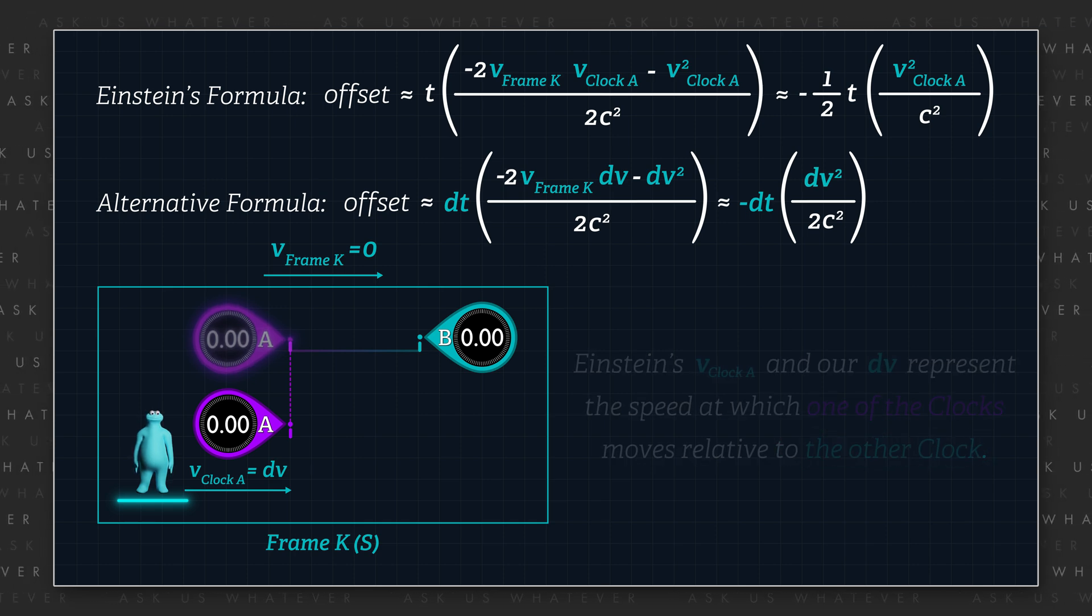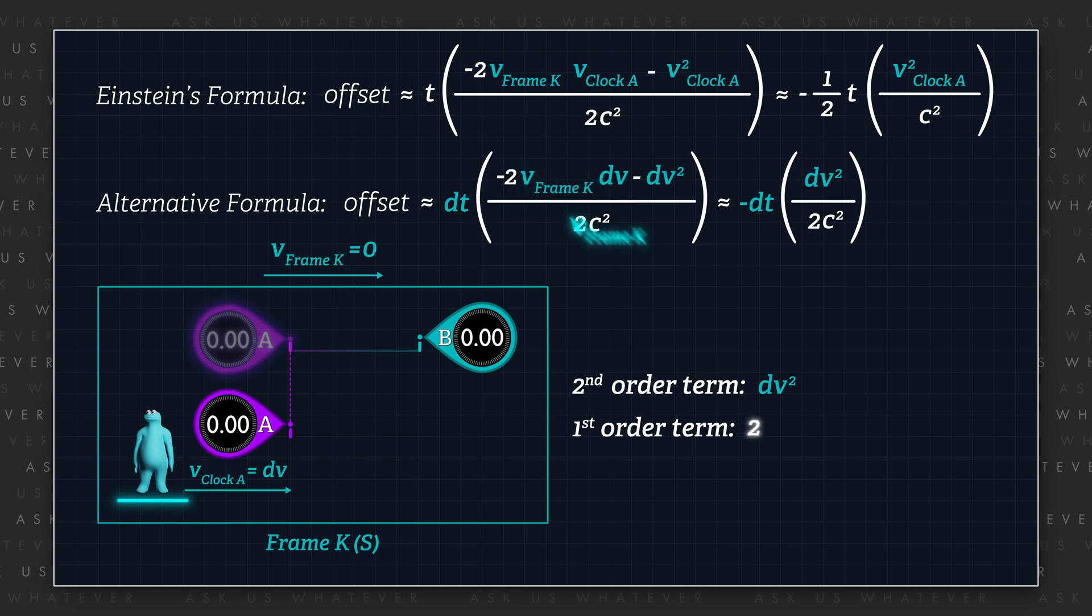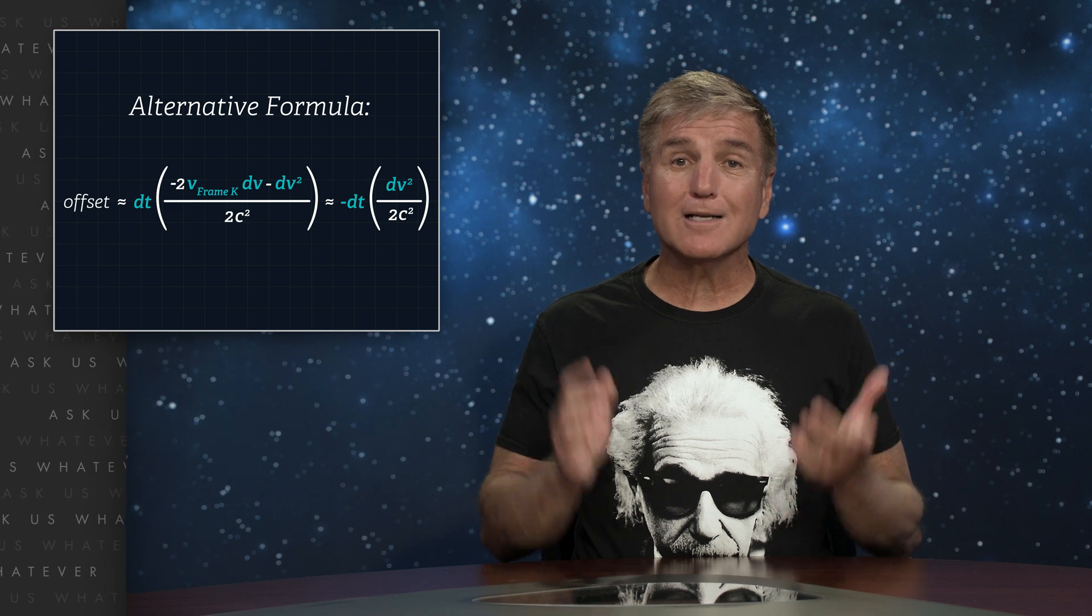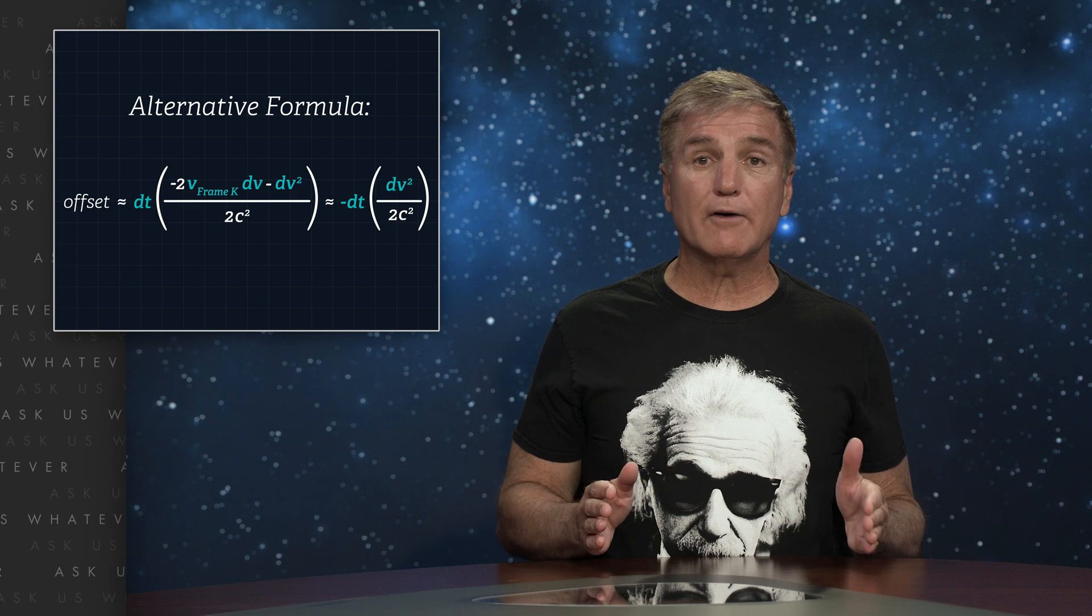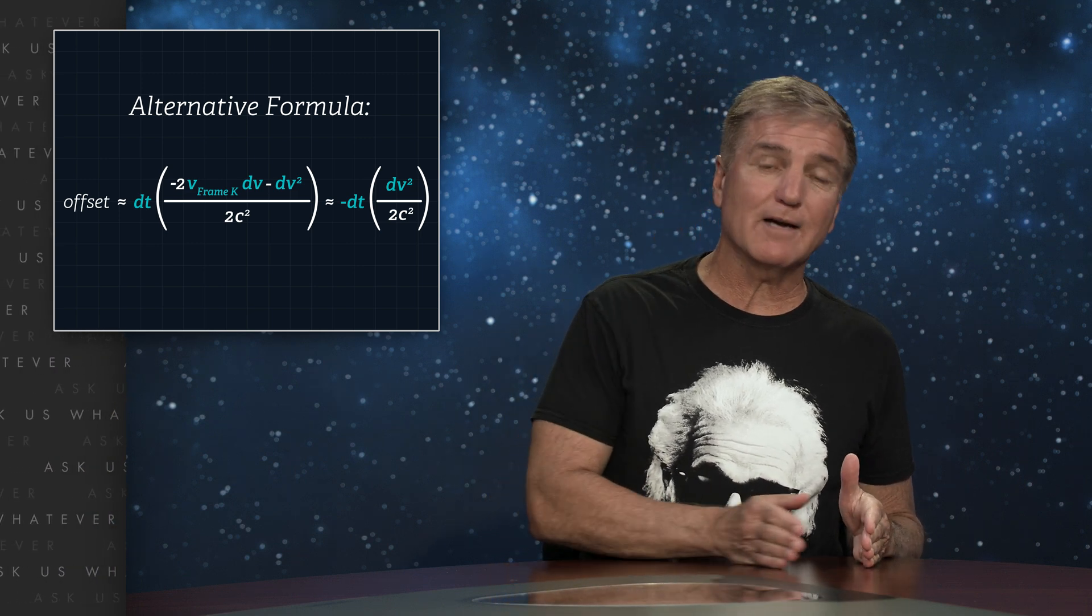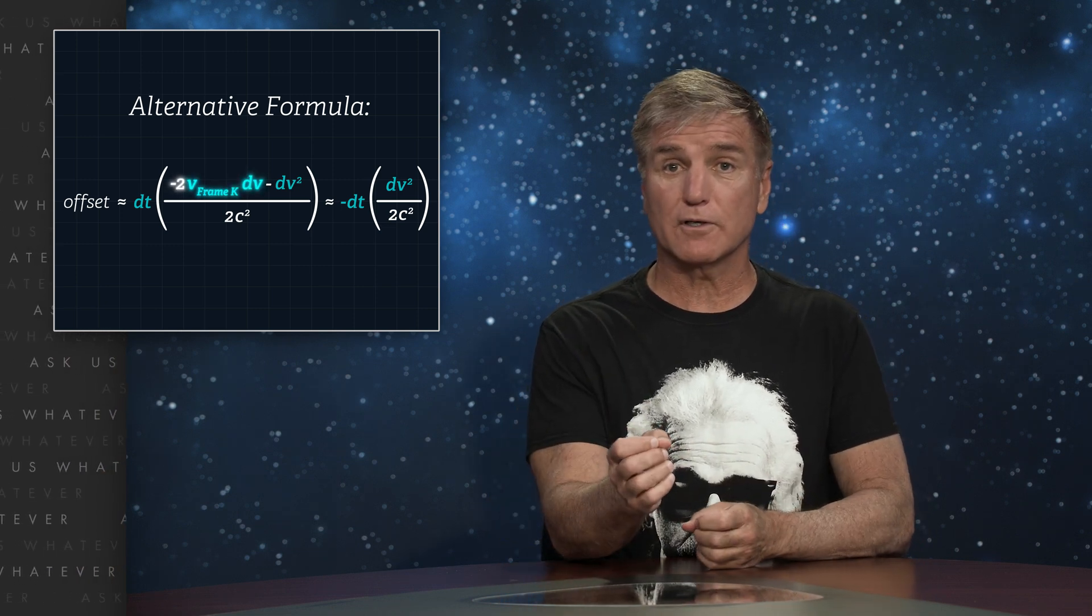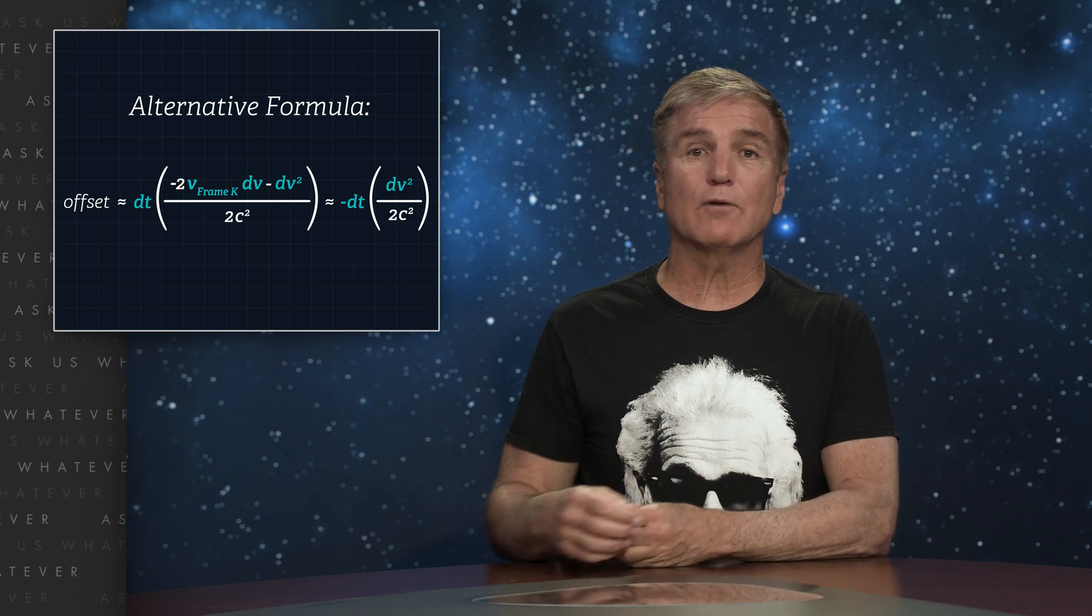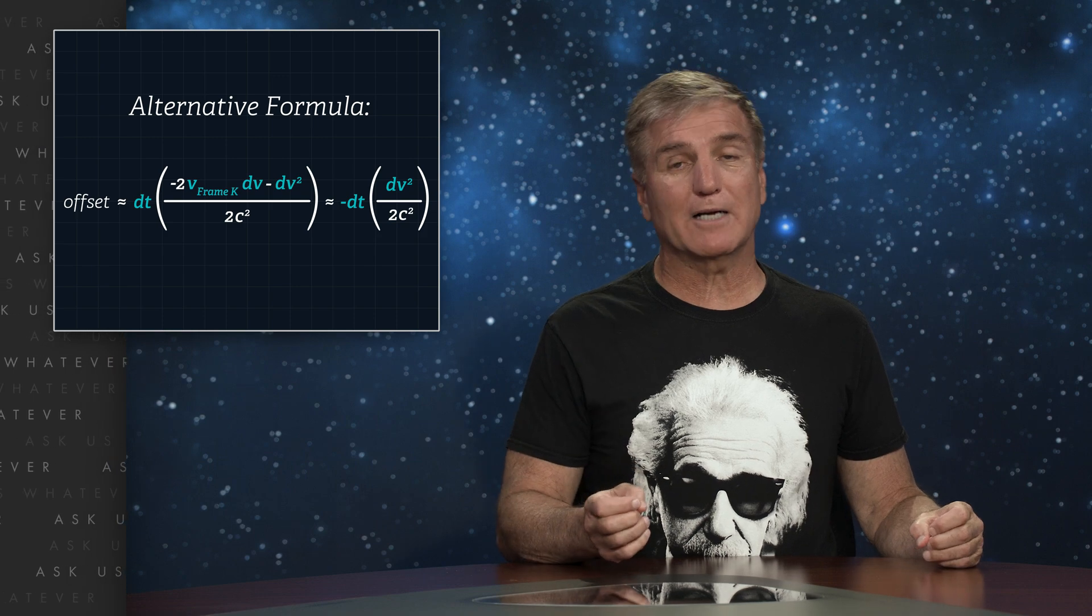Einstein's statement therefore concerned the second order term, what we call dV squared, rather than the first order term, 2 times V times dV in our analysis. That is, Einstein understood that clock readings in a stationary inertial reference frame would vary in proportion to the square of their relative speed within that reference frame. But he did not advance the differential speed analysis to the first order term, which must be included if the reference frame of the clocks is moving through space. In other words, moving with respect to frame S.